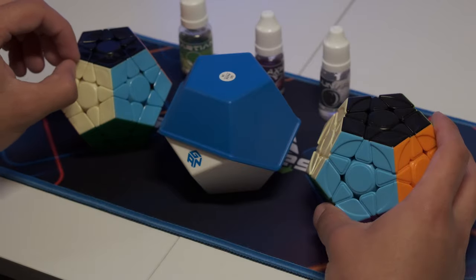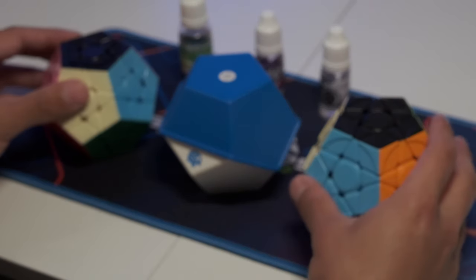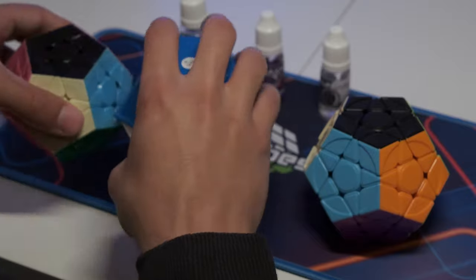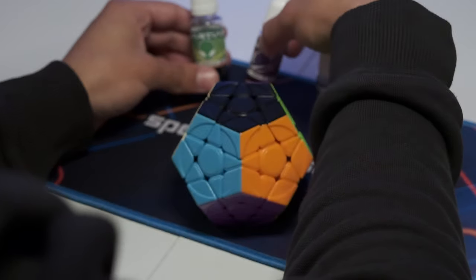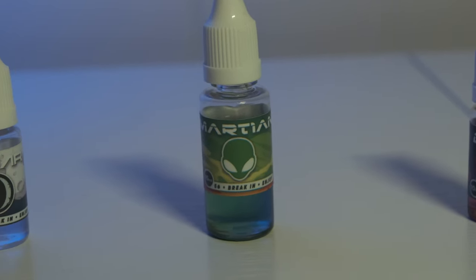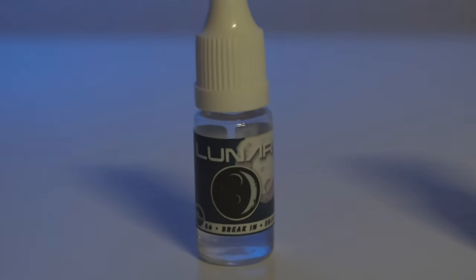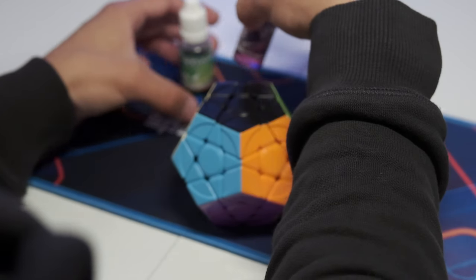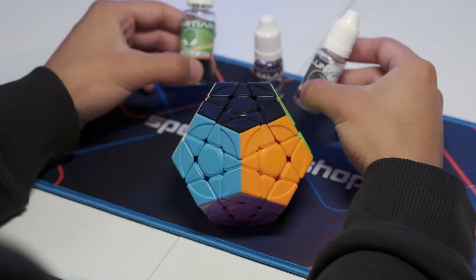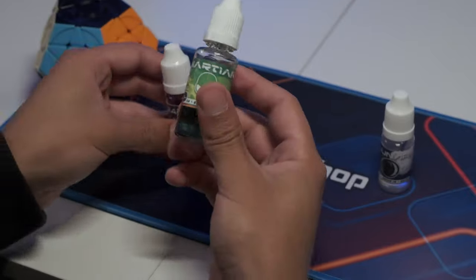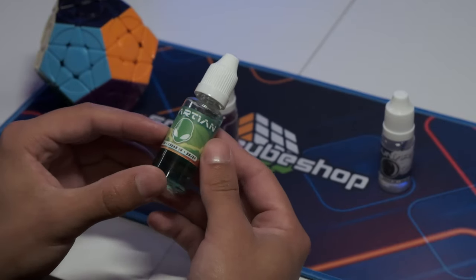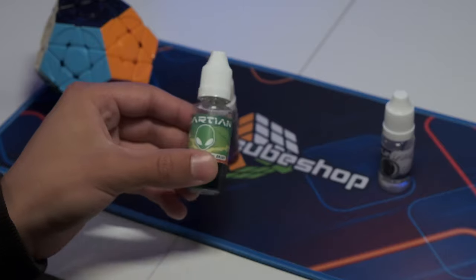So anyways, let's start with the YuHu V2 because I feel like most people have that. And these lubes I have back here are the best ones that I have found to work with megaminx. So I've tried a bunch of different lubes, and I think the best one, like if you could only get one lube, I really recommend the Martian. It's just all around really good, very versatile, not just for megaminx for multiple events.